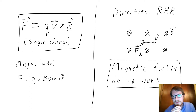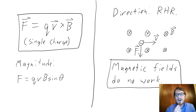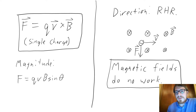Just like the force on a negative electric charge in an electric field is opposite the direction of a positive charge in an electric field, the direction of force on a negative charge in a magnetic field is opposite the direction of the force on a positive charge in a magnetic field. As an example, consider a negative charge moving to the right through a magnetic field pointing into the board.